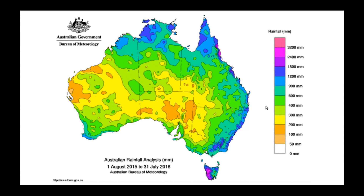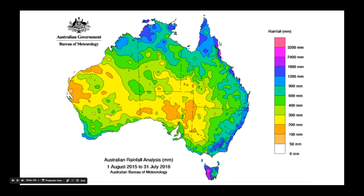This map shows the average rainfall over a recent 12-month period. We can see that inland Australia doesn't have great amounts of rainfall. The northern areas fluctuate, giving them an overall higher average rainfall than other inland areas, and our southeastern corner has the highest average rainfalls within Australia. The northern Queensland coast also experiences monsoonal rainfalls similar to those in the Northern Territory.